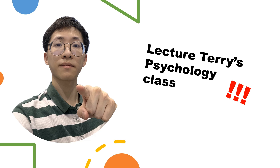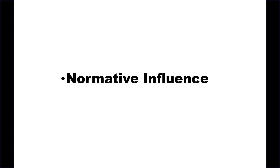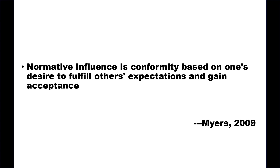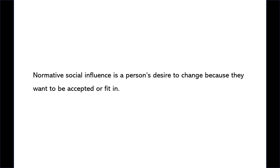Welcome to Lecture Terry's psychology class. Today we're going to talk about normative influence. Normative influence is conformity based on one's desire to fulfill others' expectations. According to Myers (2009), normative social influence is a person's desire to change because they want to be accepted or fit in. Teenagers may wear a certain style of clothing because they want to look like they belong to a specific group of peers.